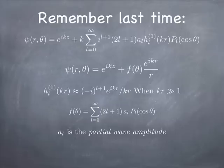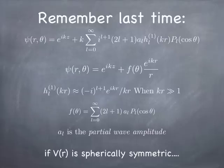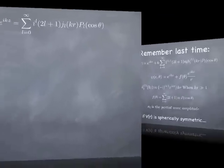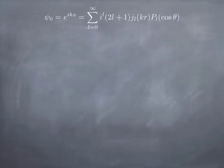If the potential is spherically symmetric, then you can't move probability from one component to another — the probability has to be the same. What that means is really all that can happen is a change of phase.